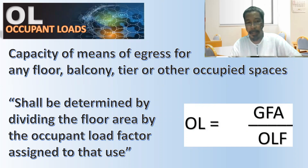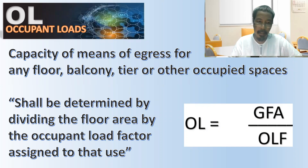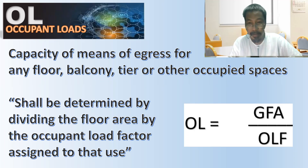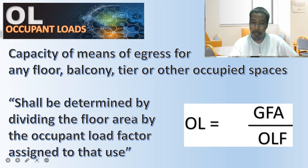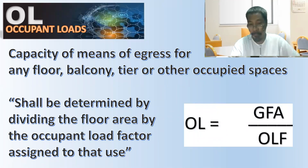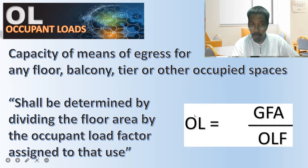When we say floor area, we almost always mean gross floor area, unless it is specifically stated otherwise. So in NFPA 101 we will always use gross floor area when the term floor area is used. The formula for determination of occupant load is: Occupant Load (OL) equals Gross Floor Area divided by the Occupant Load Factor.